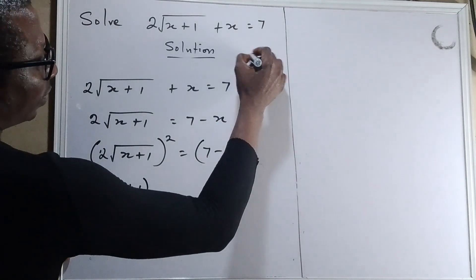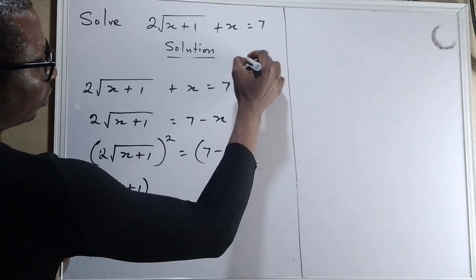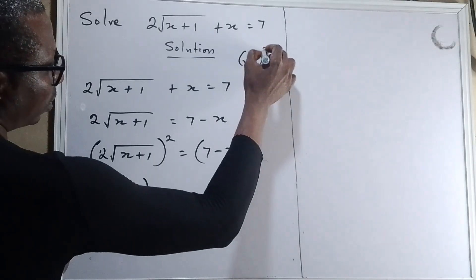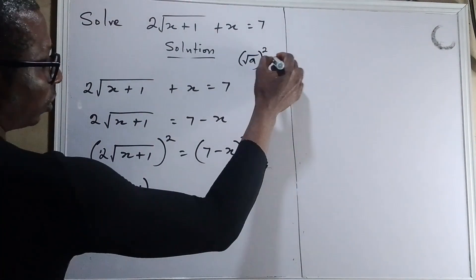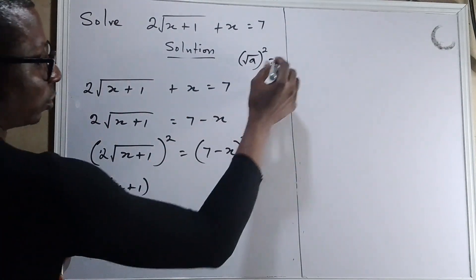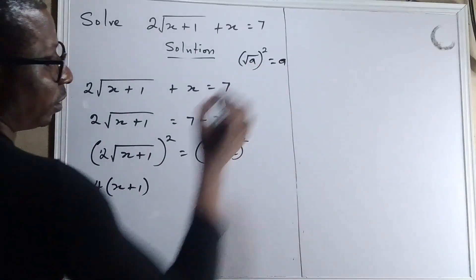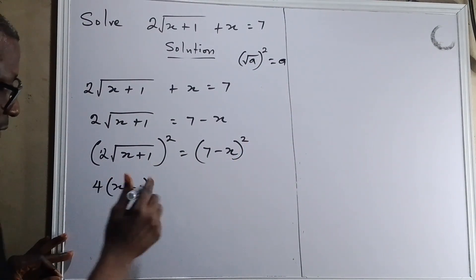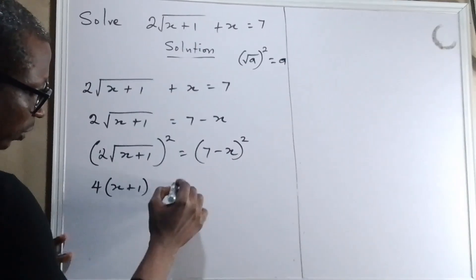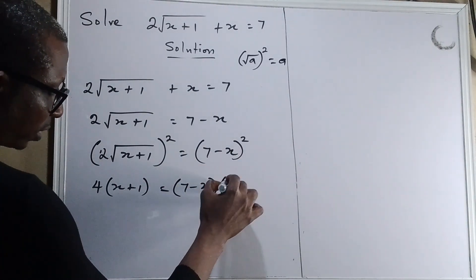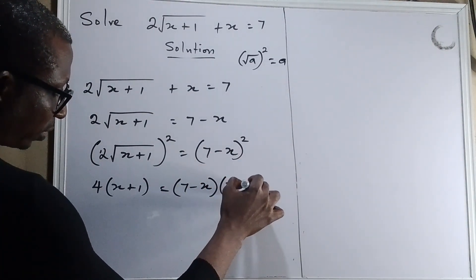If I have square root of a and I square it, the result is going to be what we have inside. The same thing also applies to this. So now we are going to expand — this is 7 minus x times 7 minus x.